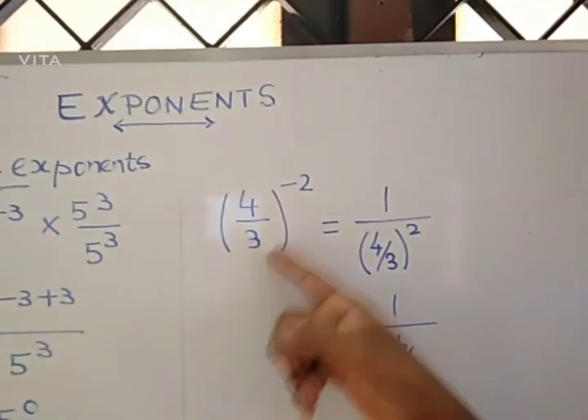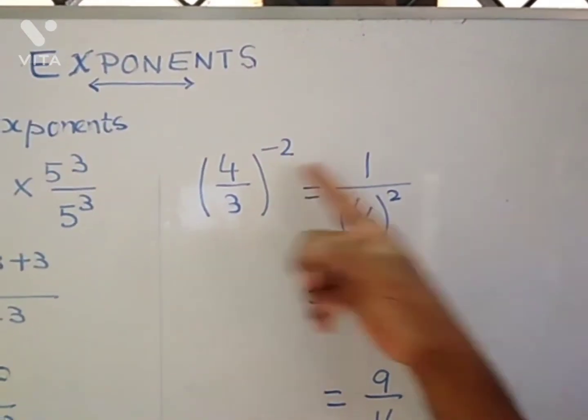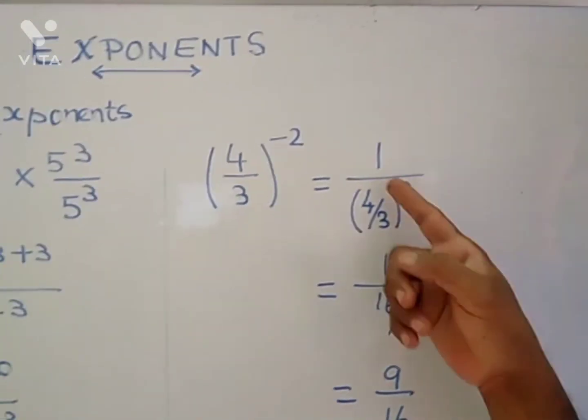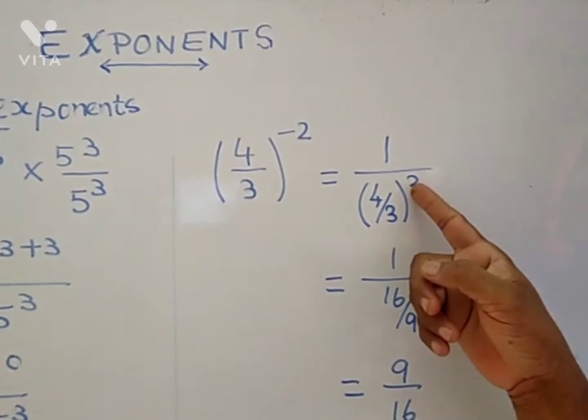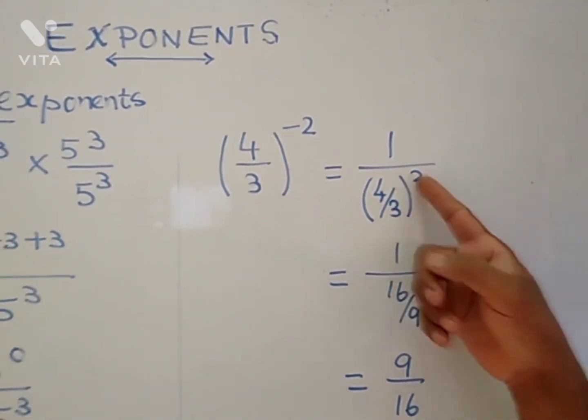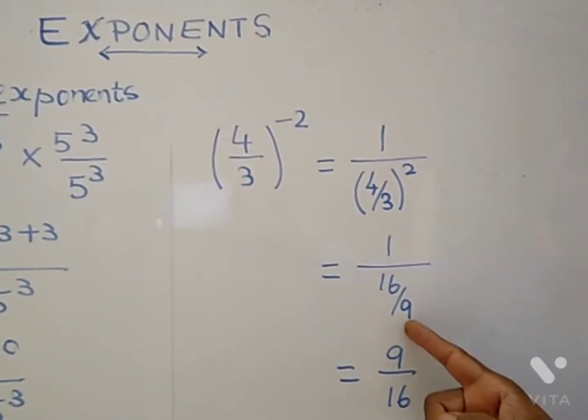Let's take an example. Four by three power minus two. How do you see that? When negative becomes positive, four squared is sixteen, three squared is nine.